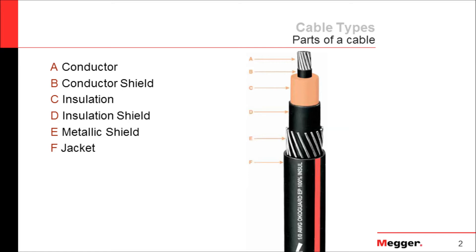Next, we have the conductor shield. After this, the layer of insulation — there are various different types of insulation, as well as different colors. The next layer is the insulation shield, commonly known as the semicon layer. After this, we have the metallic shield, and because there are several types of shields, this component tends to have various names.